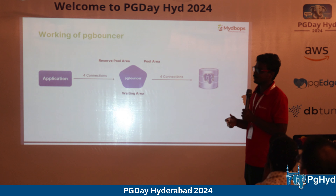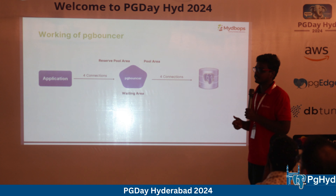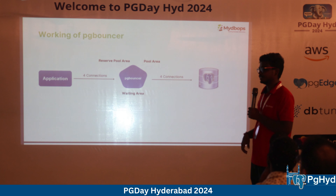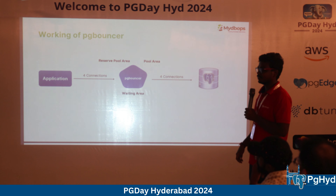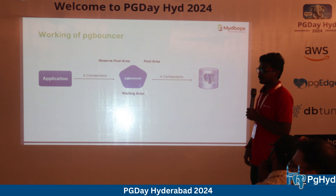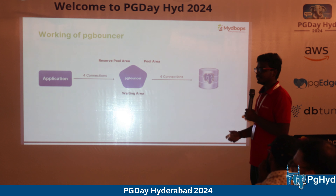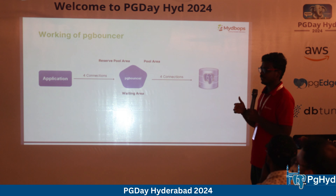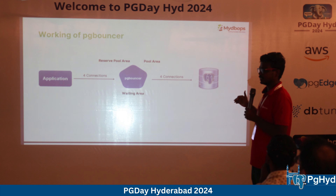Deploying PG Bouncer on the application server is the recommended approach. If the app server goes down, PG Bouncer goes down with it, which is acceptable behavior. Deploying it on the database server is not usually recommended, as it could complicate failover scenarios.